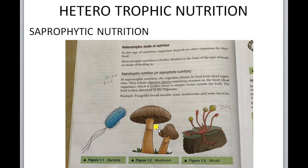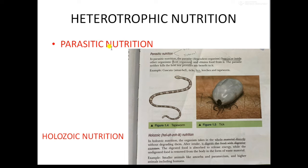In saprophytes, digestion occurs outside the body — remember that. Next, parasitic nutrition. Here the organism depends on another organism for food. The organism which gives nutrition is known as the host organism, and the organism which gets benefit is known as the parasite.